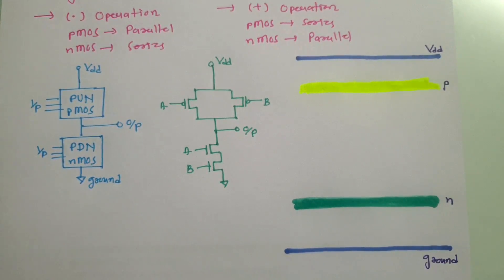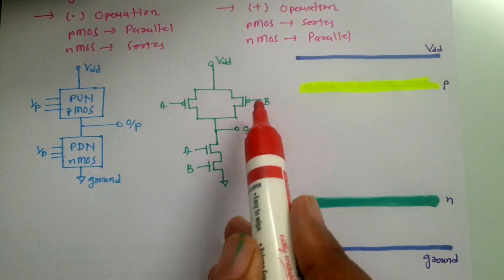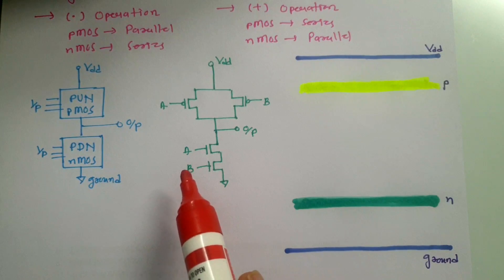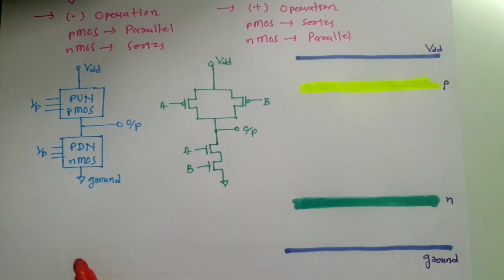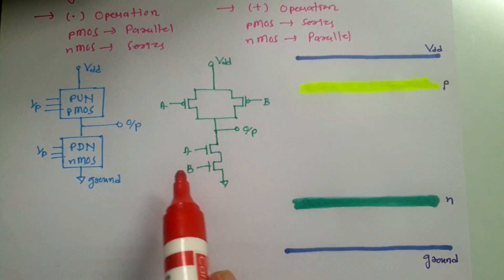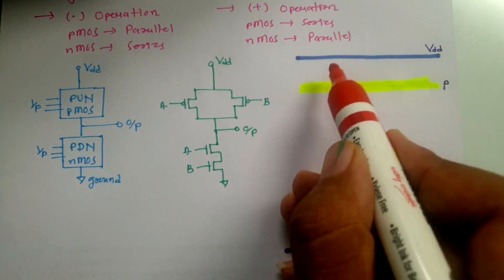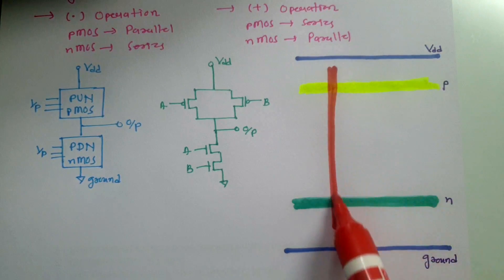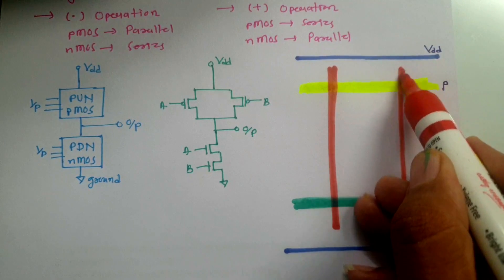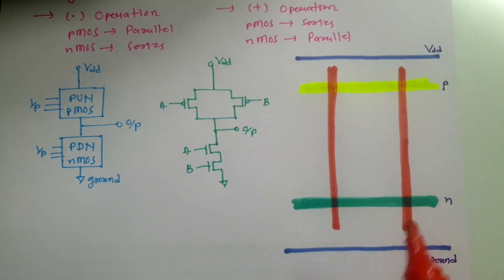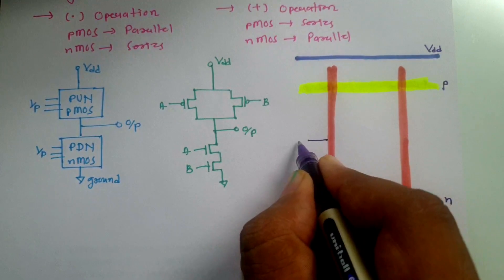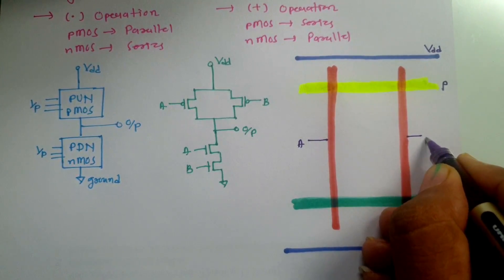Now we have two inputs, input A and input B. The gate input is connected along with the polysilicon layer, so since we have two inputs, we need two polysilicon layers. One polysilicon layer is drawn in red color, and this is my second polysilicon layer — both are vertical red lines to which we give input. So here we have input A and here we have input B.